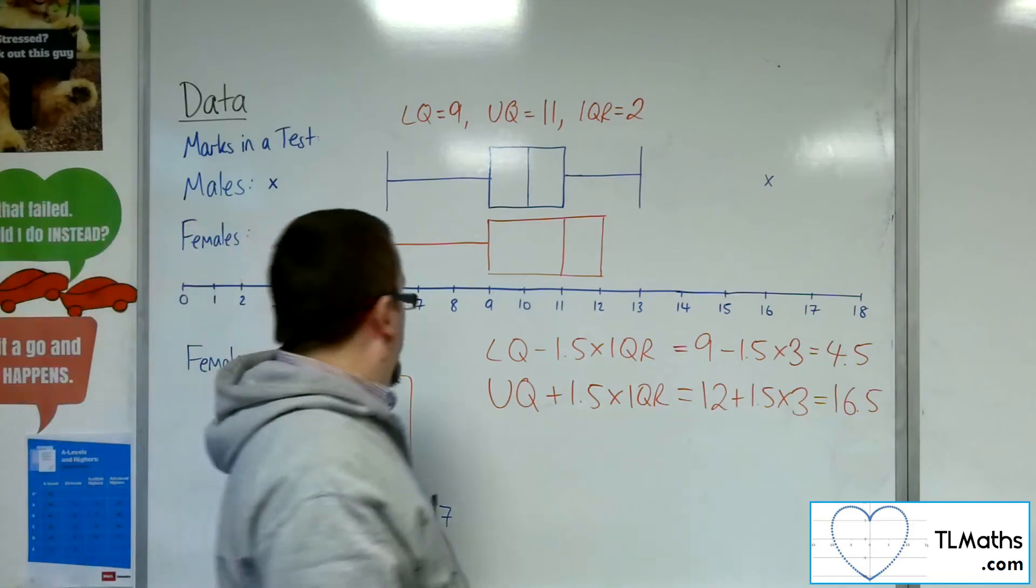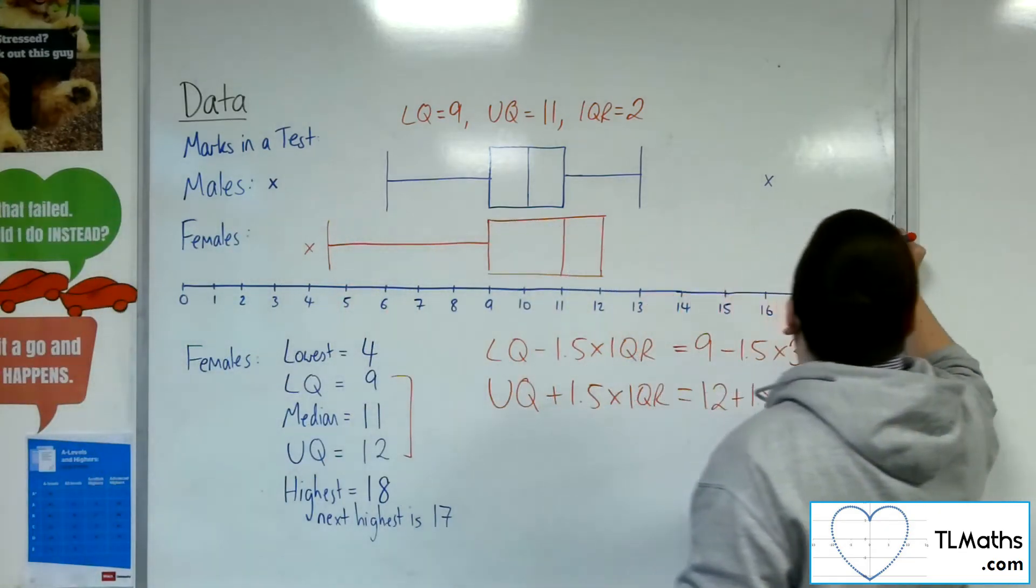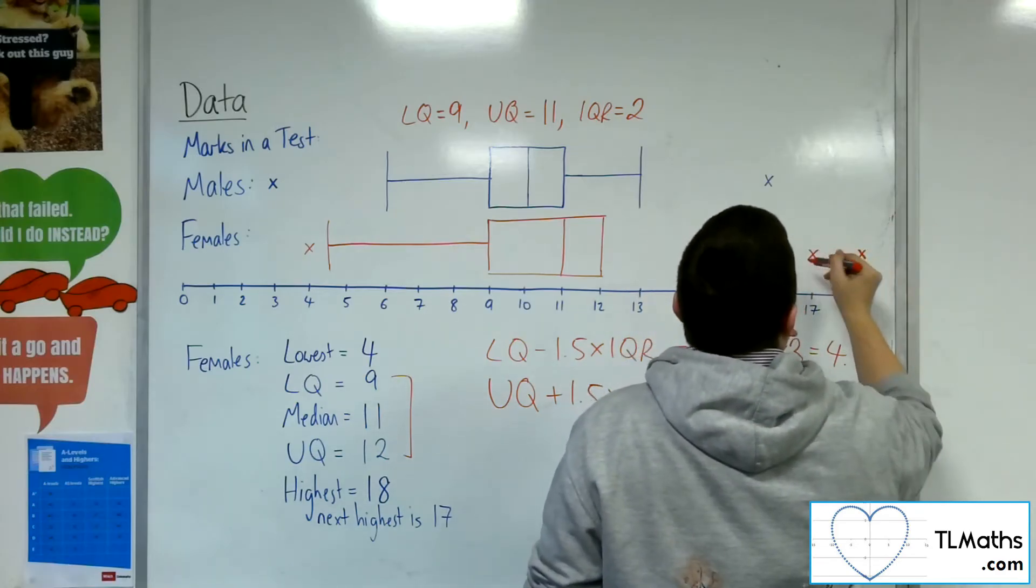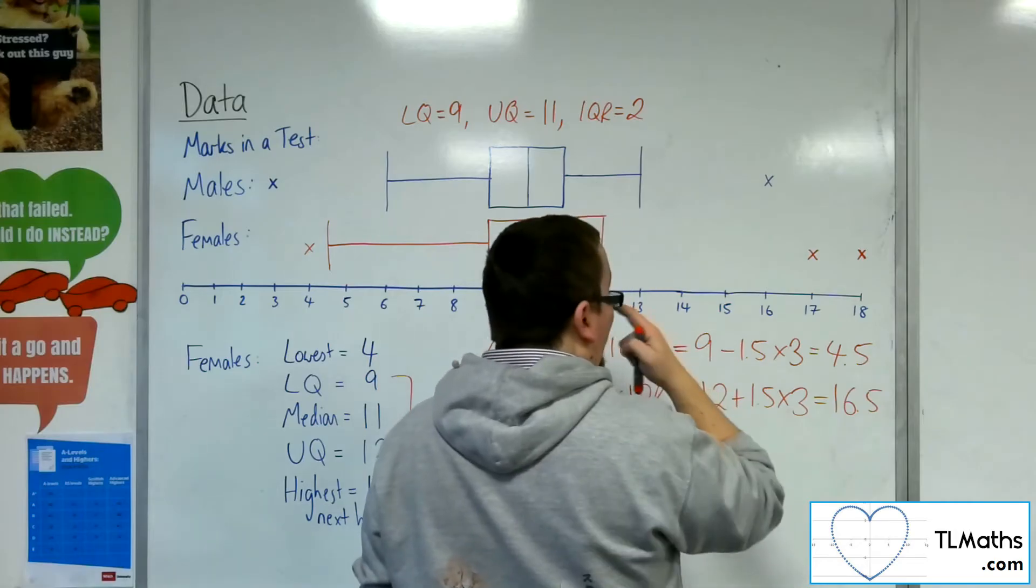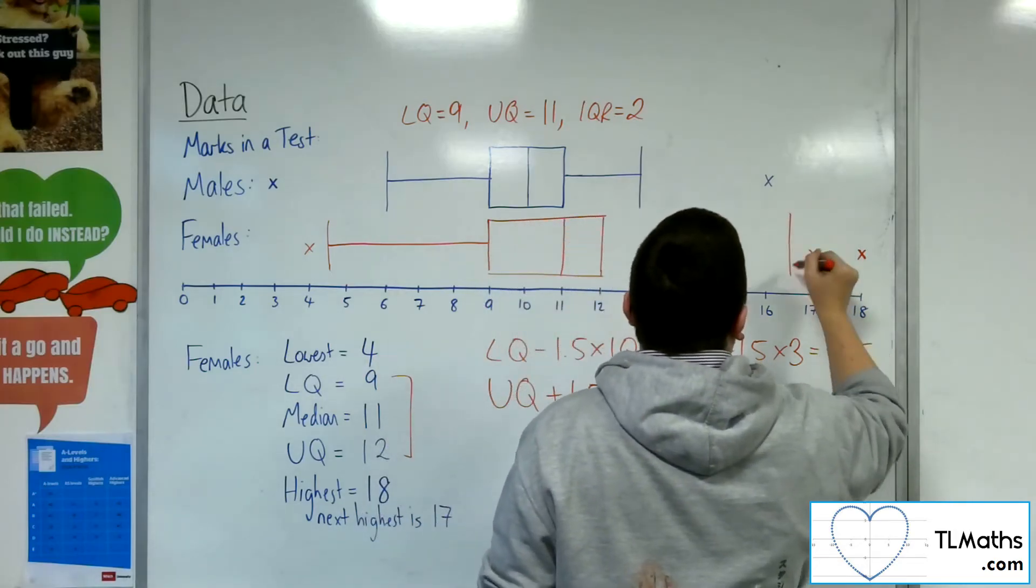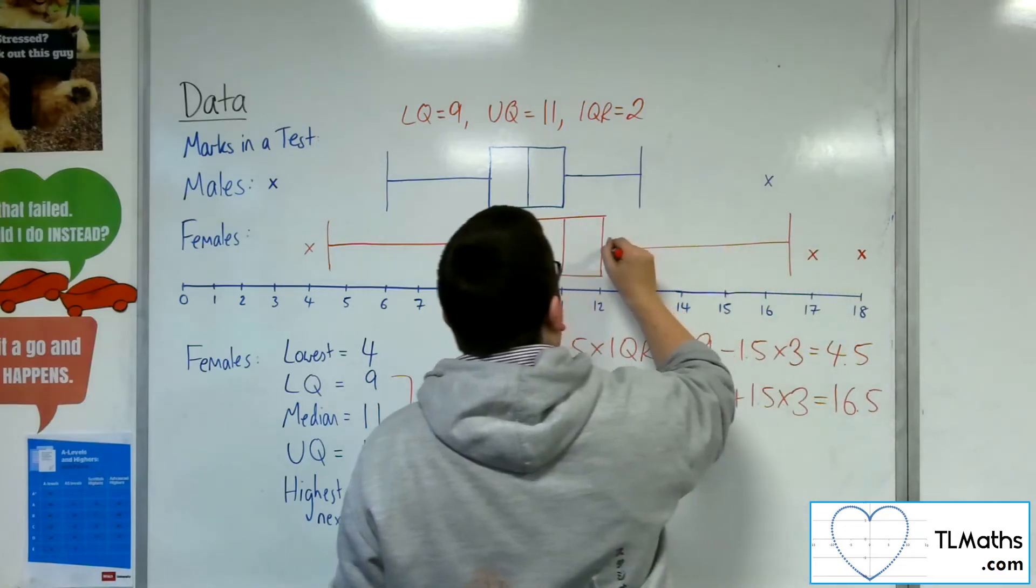So that means that 18 would appear as a cross. 17 would appear as a cross. They are both outliers. And the next, the next, the boundary is the 16.5. So I draw that in, like so.